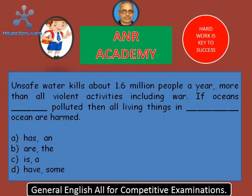Here is your second sentence: Unsafe water kills about 1.6 million people a year, more than all violent activities including war. If oceans dash polluted, then all living things in dash ocean are harmed.